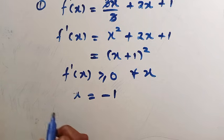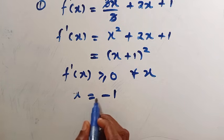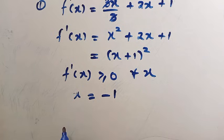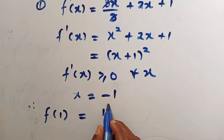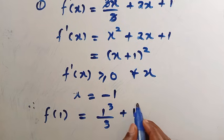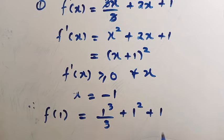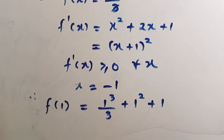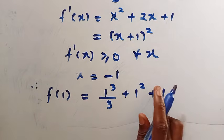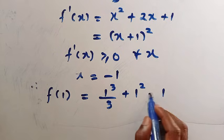this is the only point where we have 0. So therefore, let's check by substituting x equals minus 1 into the original function. We have f of 1 equals